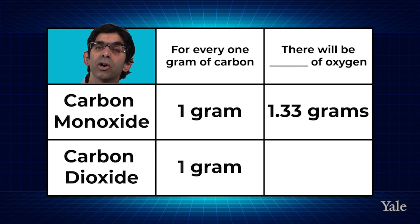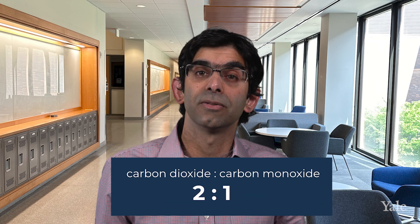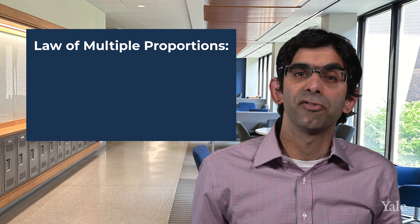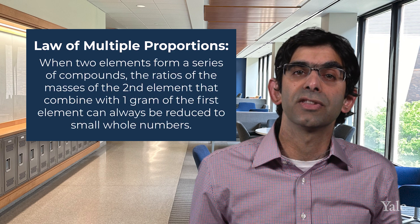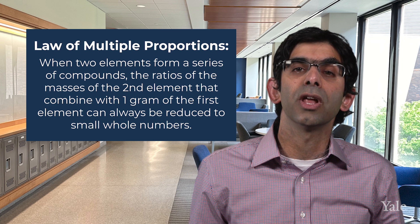In our second compound, carbon dioxide, when there is one gram of carbon, there will be 2.66 grams of oxygen. What do you notice about the amount of oxygen in the two compounds? The ratio of the mass of oxygen in the two compounds is 2 to 1. This is predicted by the law of multiple proportions, which says when two elements form a series of compounds, the ratios of the masses of the second element that combine with one gram of the first element can always be reduced to small, whole numbers. So, as in our example, if one compound has the formula CO, then we find a new compound with twice as much oxygen, we know it must be CO2.